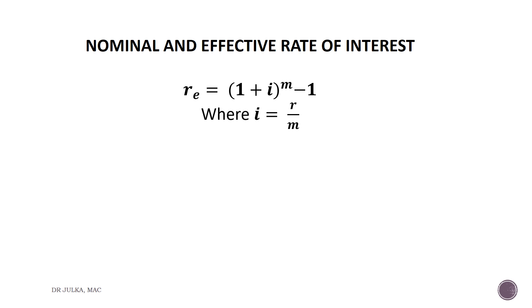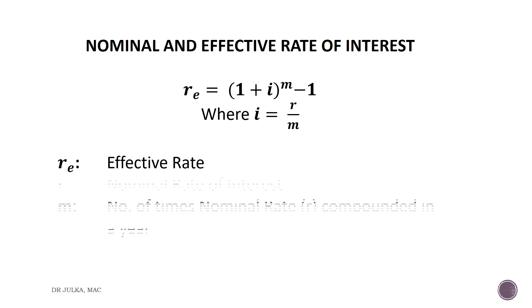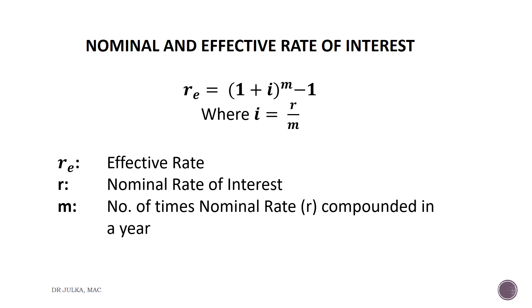The formula for calculation of effective rate of interest is: Re equals 1 plus i, whole raised to the power m, minus 1, where i is R divided by m. Here Re is the effective rate of interest, R is the nominal rate of interest, and m is the number of times the nominal rate is compounded in a year.